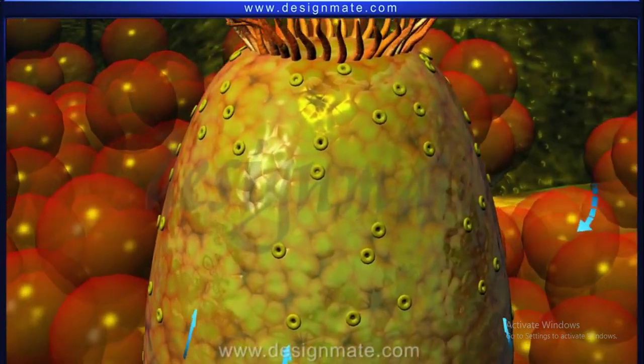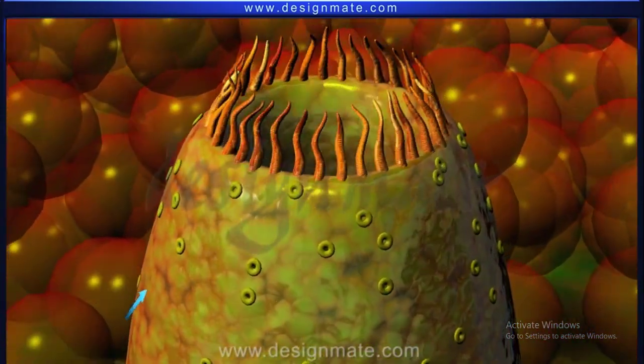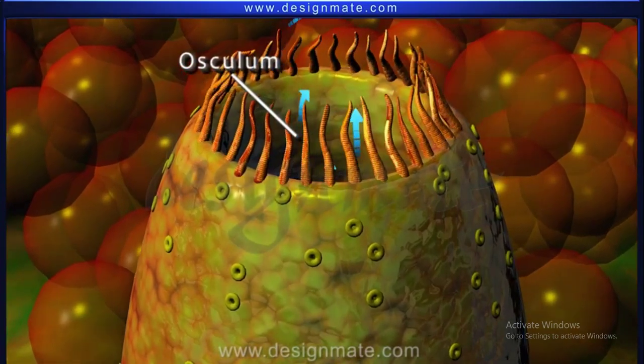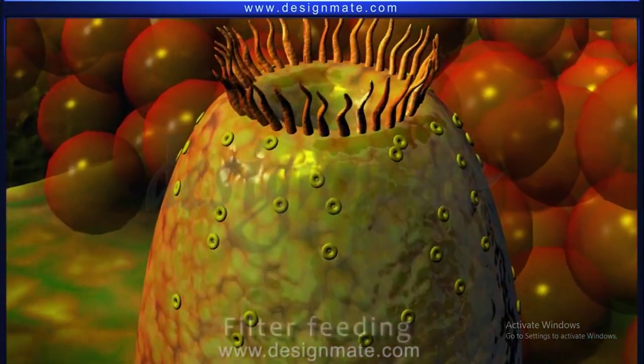From the outside we can see water entering through the Ostia and moving out through the Osculum. This method of nutrition is called Filter Feeding.